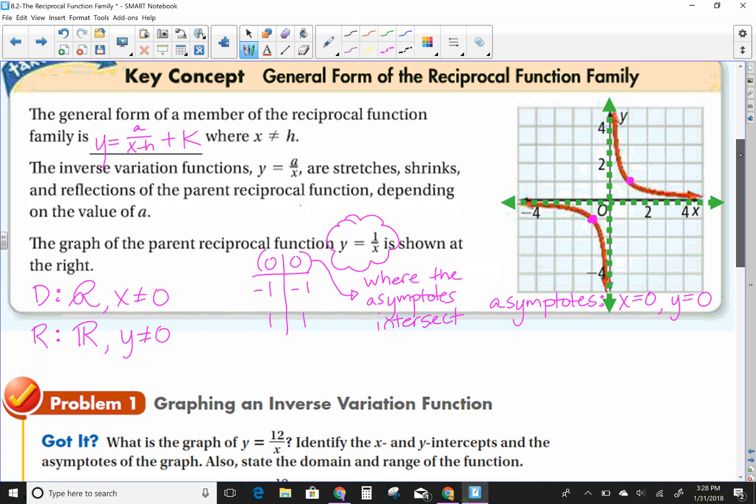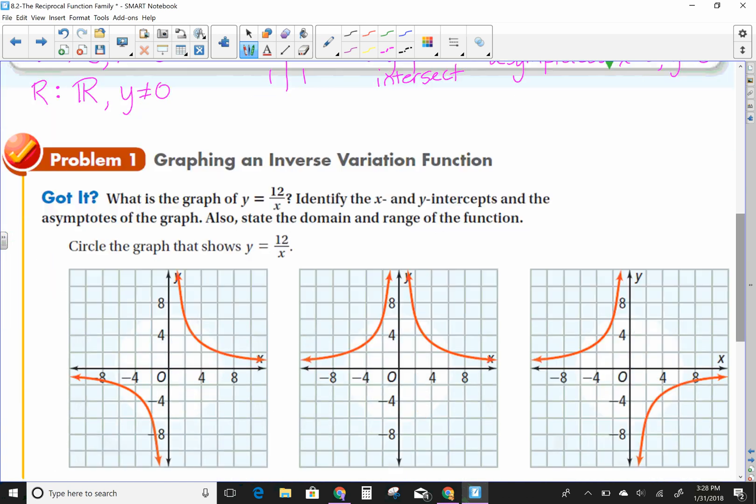So look at this first problem, graphing an inverse variation. And what I'm going to tell you to do this problem, if we're looking for the graph of y equals 12 over x, a is equal to 12. So I want you to come up with two numbers that multiply together to give you 12. We had different examples in class. So anything, one of course is always one of them that works, but it might not fit on your graph. So let's go with 2 and 6. That's one of the numbers my people came up with today.